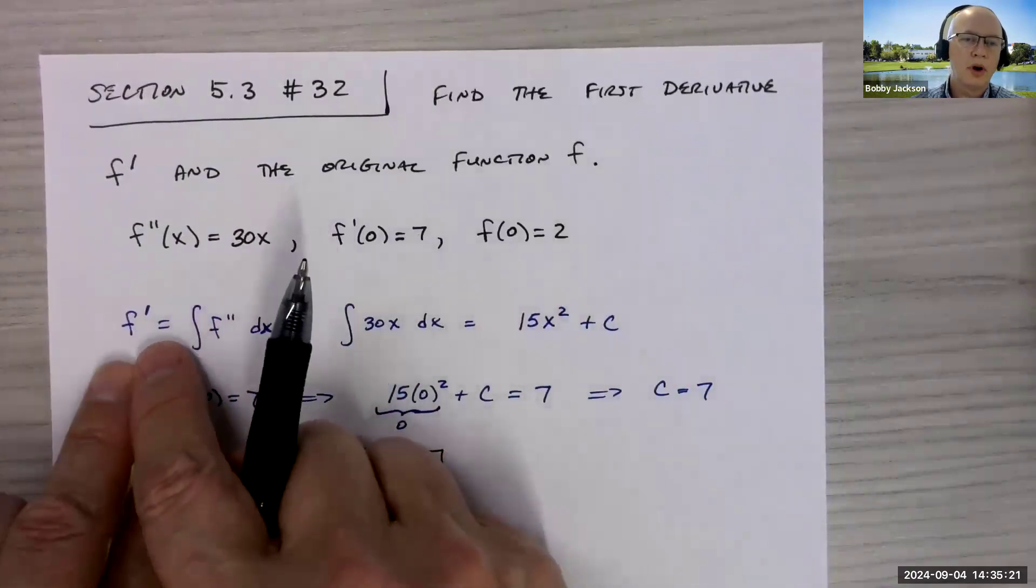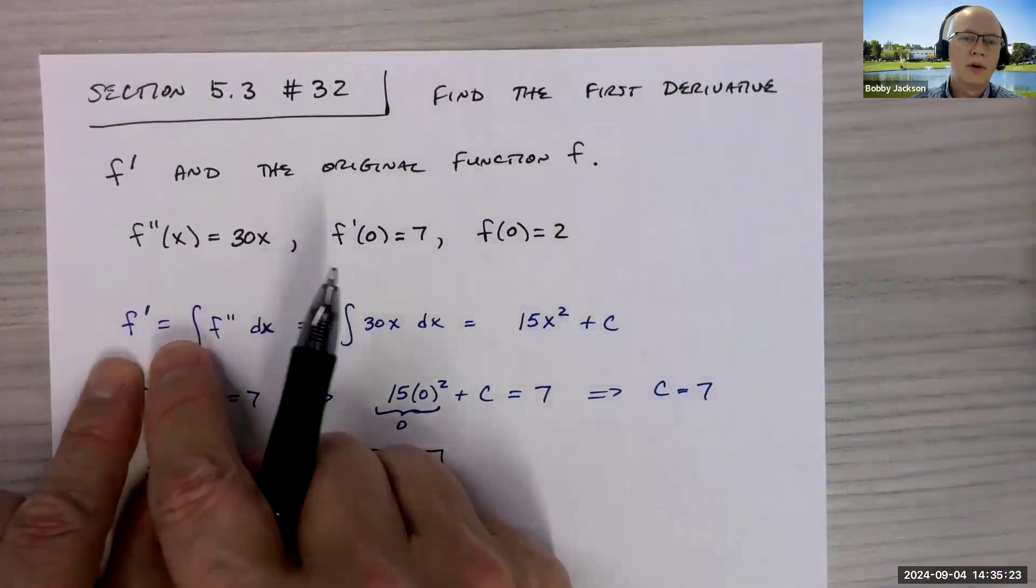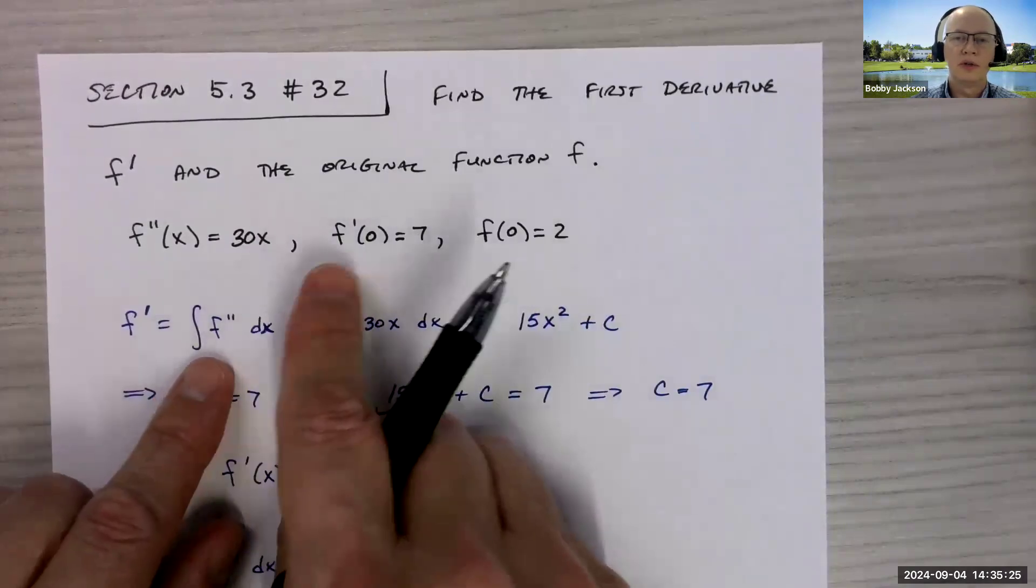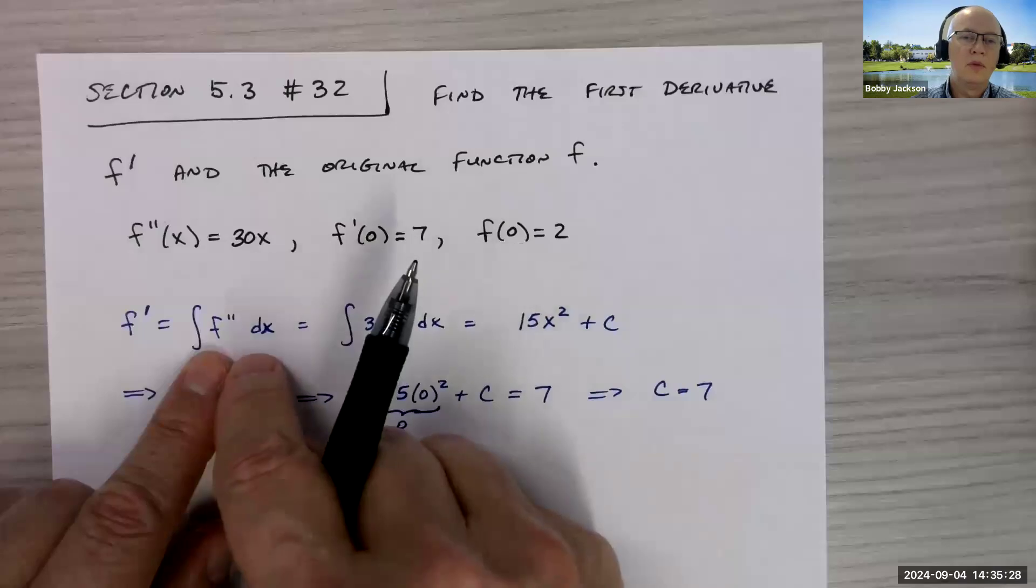First of all, I'm gonna find f prime by integrating f double prime, we'll apply the initial condition here for f prime and then we will find f by integrating f prime.